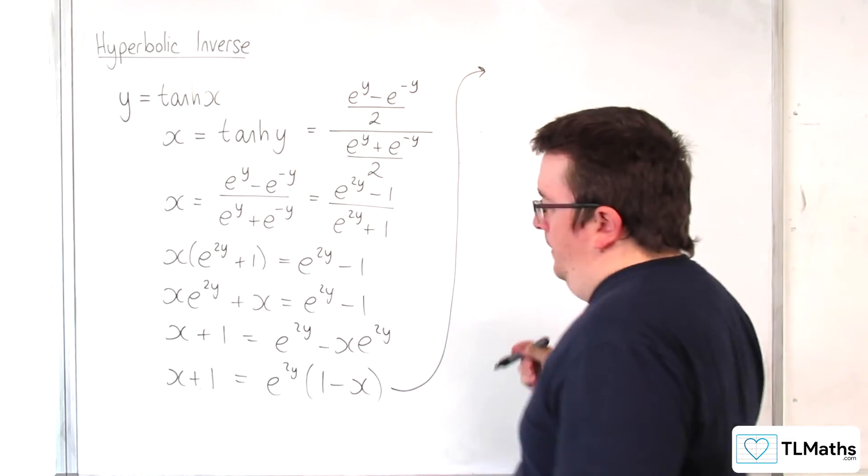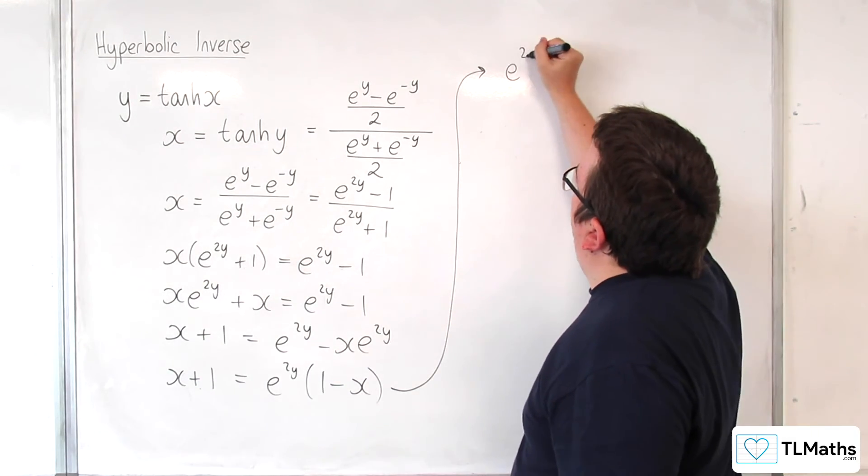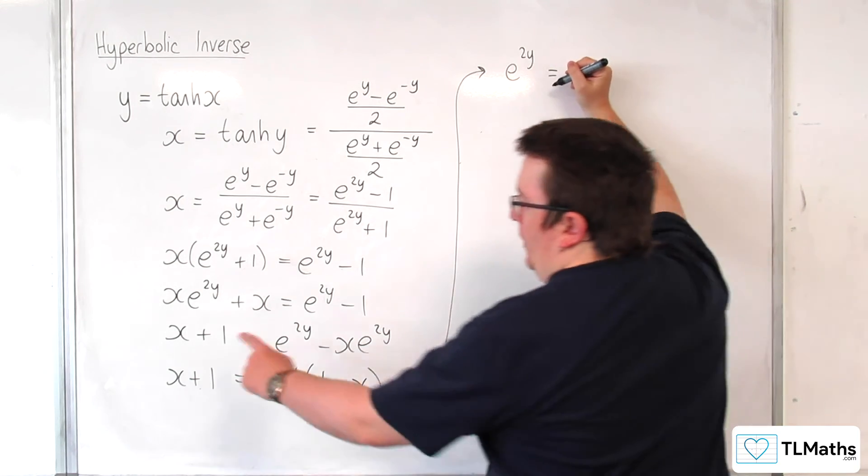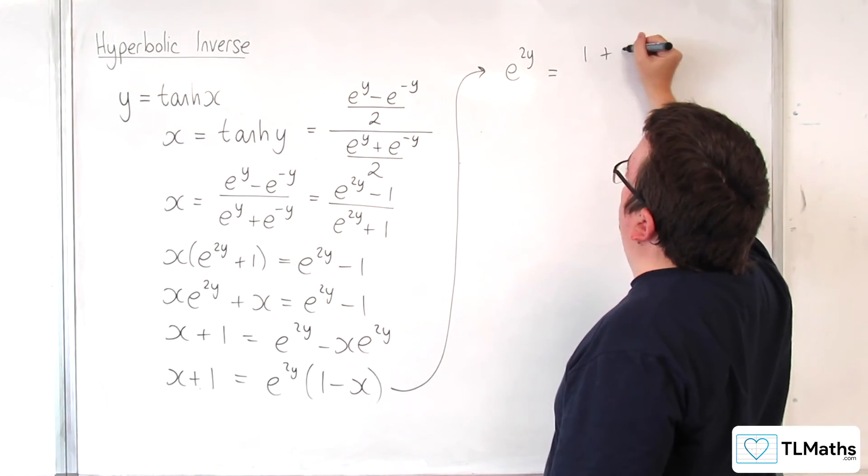Let's go up here. So then e to the 2y is going to be equal to 1 plus x over 1 take away x.